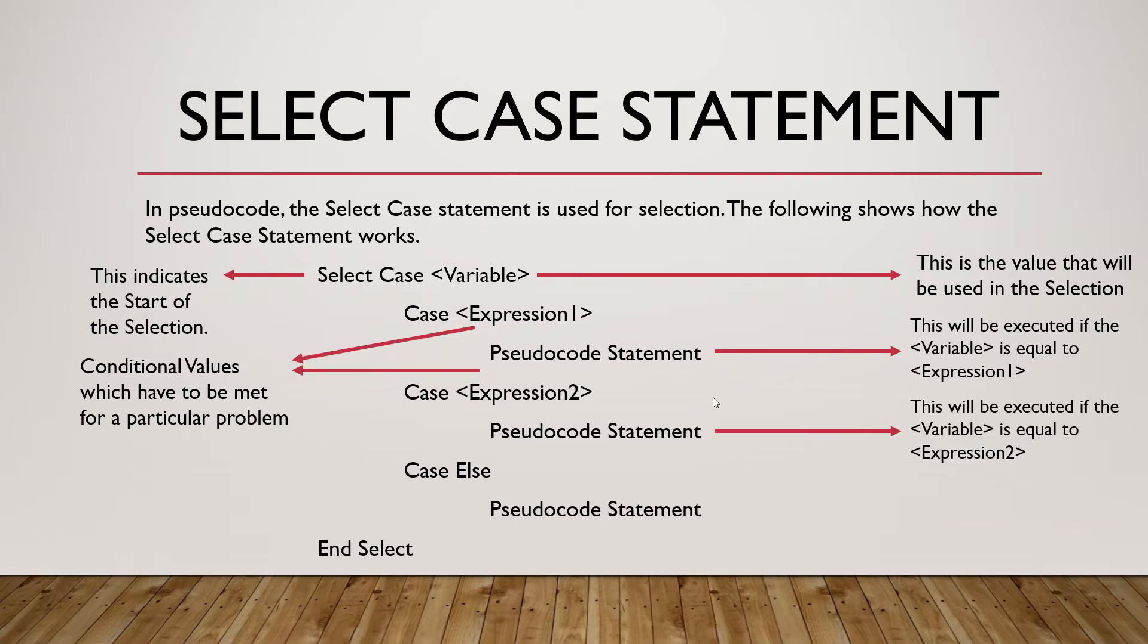So this will be for second expression, this will be executed if the variable is equal to Expression2. And if they are not, the value in the variable is not equal to Expression1, is not equal to Expression2, it will go to Case Else and this part will be executed. The End Select part indicates the end of the selection.